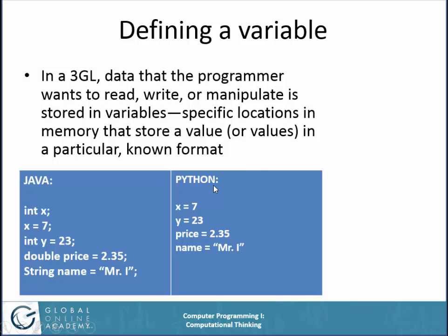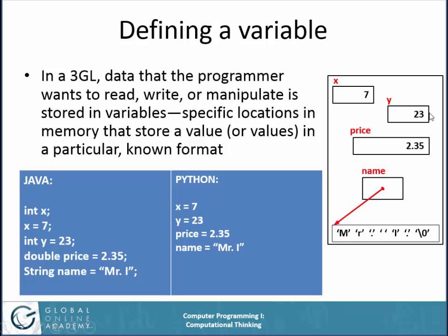In Java, there are lots of semicolons; Python doesn't use them. What's happening in memory? The big rectangle is all memory available to your program. When you declare 'int x' and assign it 7, it reserves that part of memory — can't be used for anything else — and stores the binary equivalent of 7. Similarly, int y gets 23, and the double precision floating point for price gets 2.35. Notice something different happens with the string: it takes enough room to store a memory address — 32 or 64 bits depending on the operating system. What gets stored in the variable 'name' is not the value 'Mr. I' itself, but a pointer — an address to where the actual characters M, R, period, space, I, period, and a null terminator (backslash zero) are stored. That null terminator marks the end of the string.